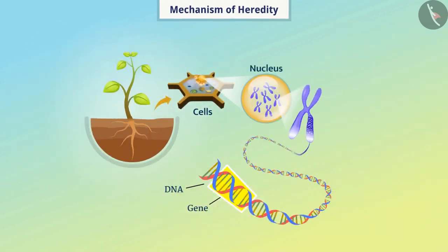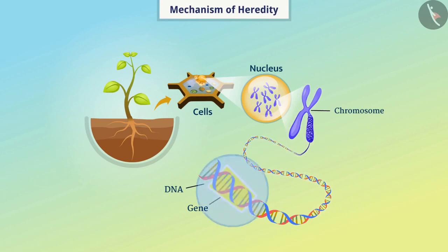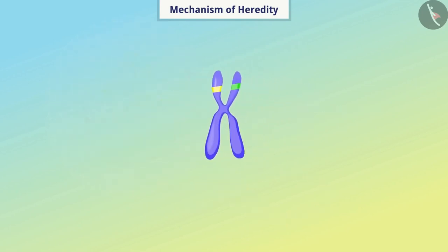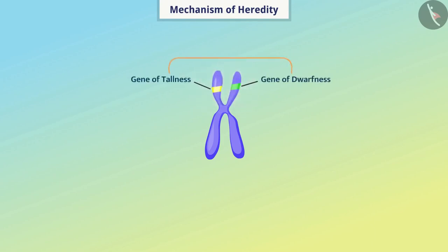In the cell, DNA forms some thin long thread-like structures called chromosomes. Since a gene is a specific part of DNA, it is also a specific part of the chromosome. Chromosomes are kept very close to each other in the cells so as to form a nucleus. A gene may have different variants that control different traits.